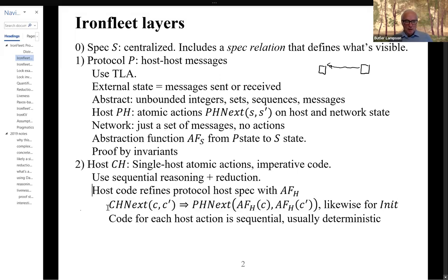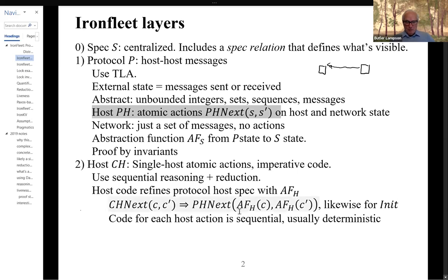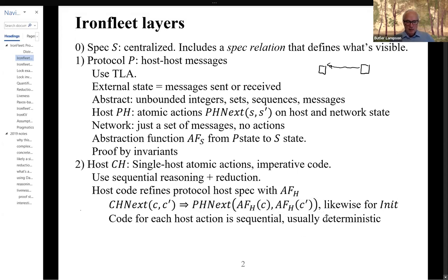It's the familiar story: you've got a ch-next predicate that defines the actions at the code level, and you have to show that that implies the ph-next action definition, which tells you what can happen at the host spec level. You have an abstraction function that maps the host state represented by C for code to the host spec state, and you have to show that every action that the host can take concretely is an action that, when mapped up by the abstraction function, the spec could take.